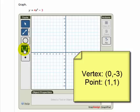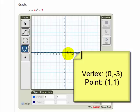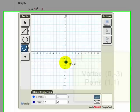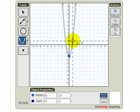So I choose the parabola, I put the vertex at 0, negative 3, and click to make a point, and then I put another point on the parabola at 1, 1.